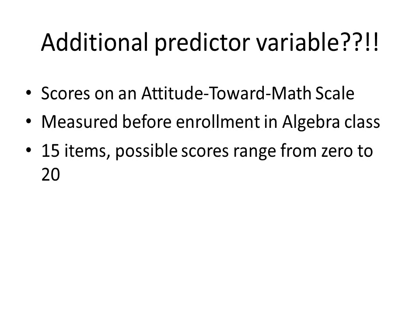Because so much of the variance in the algebra grade is not predicted by the basic math test, what you would really want to do is add an additional predictor variable to determine if the degree of prediction could be improved by using two predictors instead of only one. So the scores on an attitude toward math scale were added.